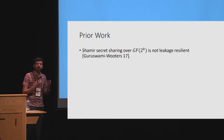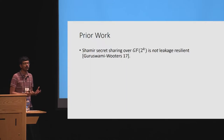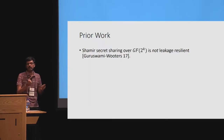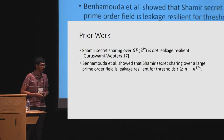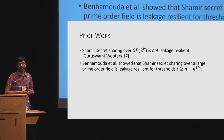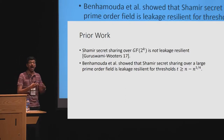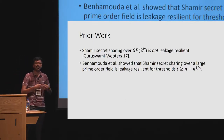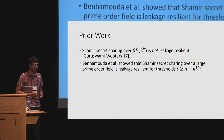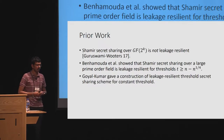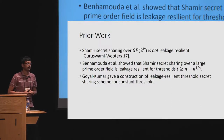Guruswamy and Wooters in 2017 showed that Shamir secret sharing, when instantiated over finite fields with characteristic two, is not leakage resilient — they showed an explicit reconstruction strategy allowing an adversary to obtain the entire secret given some partial information from all the shares. Ben Hamouda et al. showed that Shamir secret sharing over a large prime-order field is in fact leakage resilient for thresholds t greater than or equal to n minus n to the one-fourth.